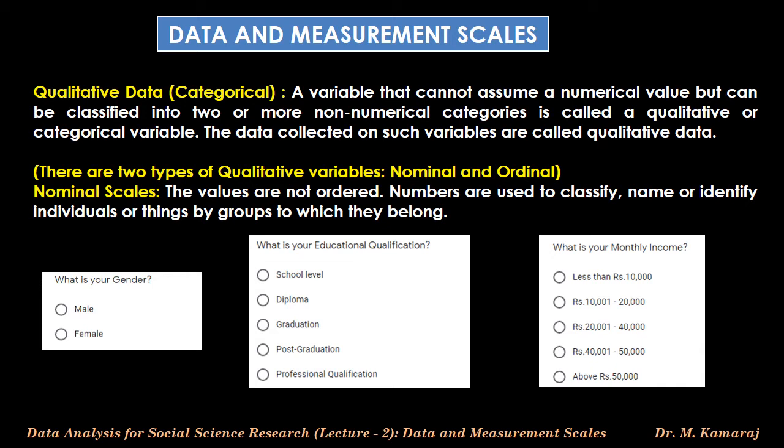Similarly, in other examples: 'What is your educational qualification?' — categories given as school level, diploma, graduation, and professional qualification. Any number can be assigned based on choice or purpose. Also, 'What is your monthly income?' — respondents are identified into various groups based on their monthly income. The numerical labels of the categories say nothing about order and cannot be used to add, subtract, multiply, or divide.